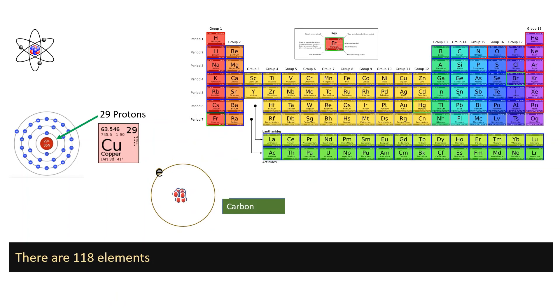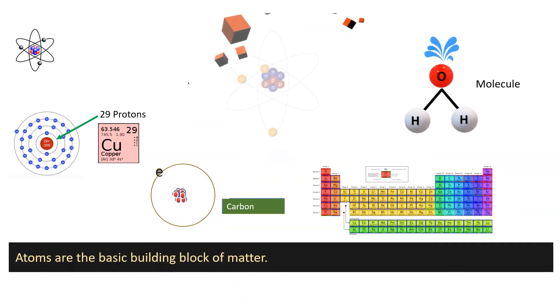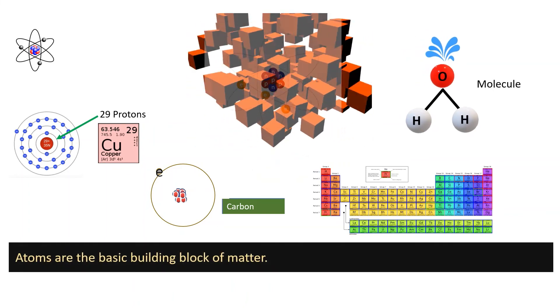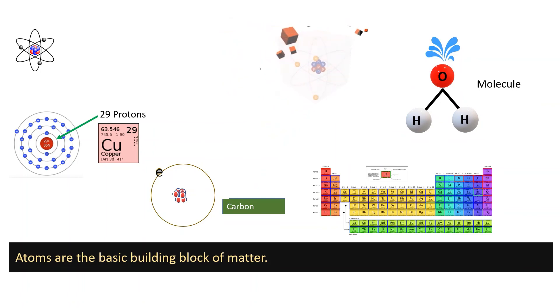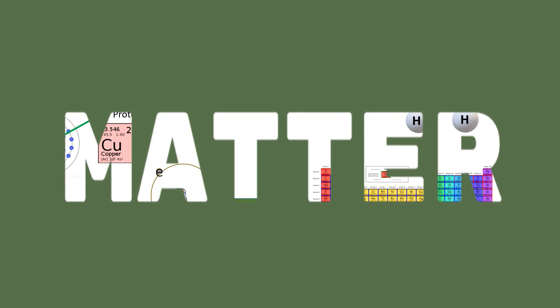There are 118 elements. The periodic table organizes all these elements. Two or more atoms of the same or different elements are combined together to form a particle called a molecule. Atoms are the basic building block of matter. Matter is anything that occupies space and has mass.